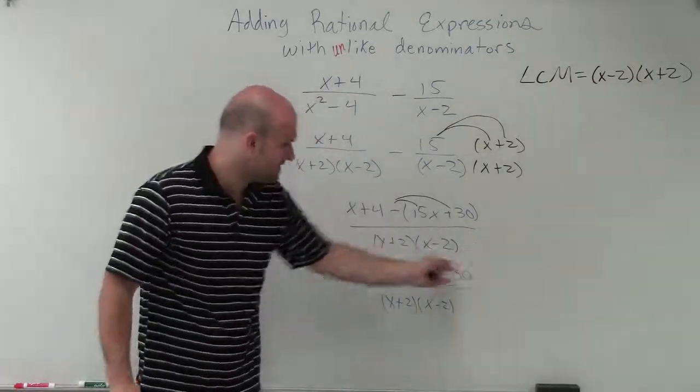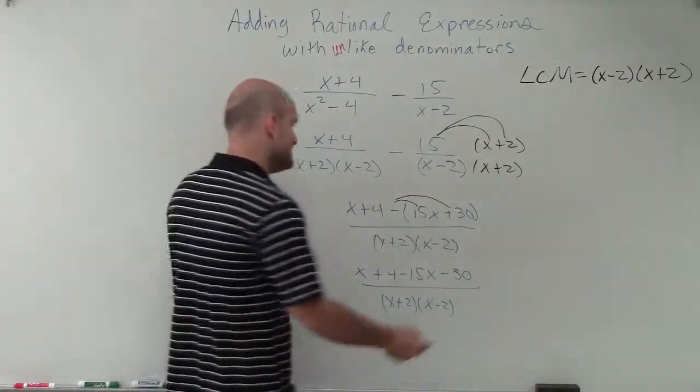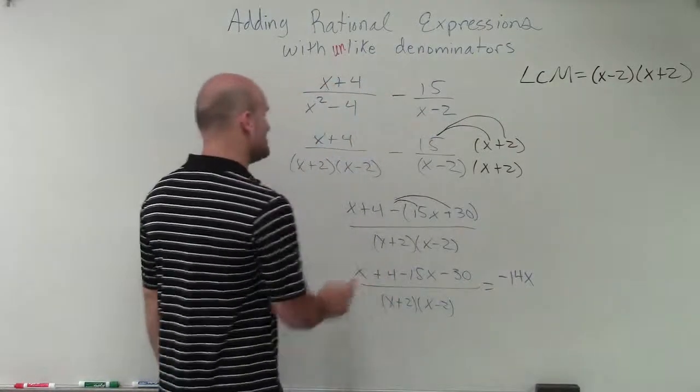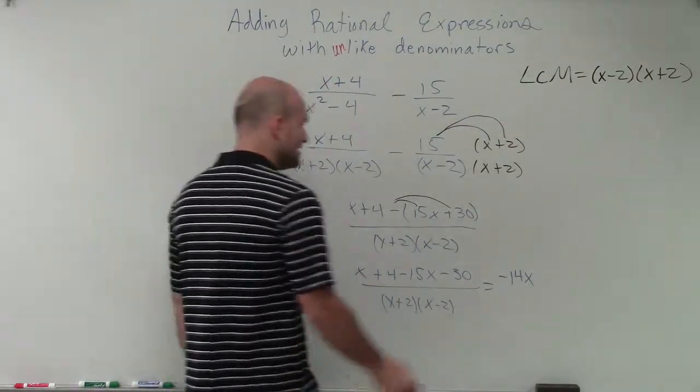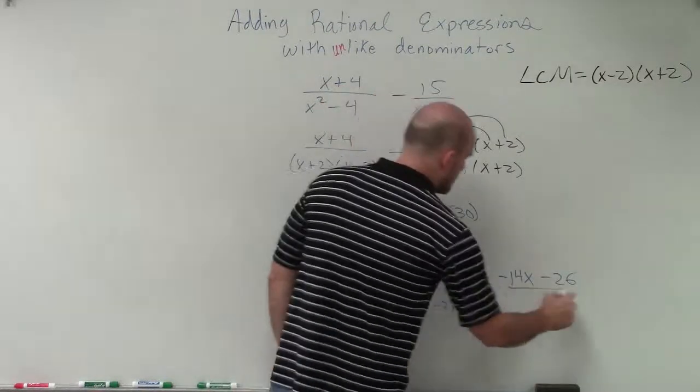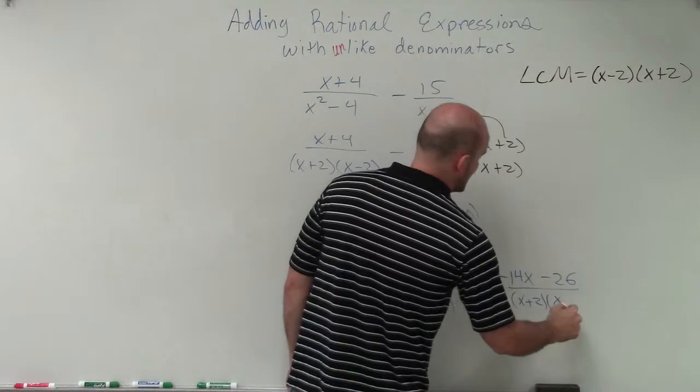Well now you see that everything's written up there. Now I can combine my terms. So x minus 15x is going to be negative 14x. And positive 4 minus 30 is going to be negative 26, all over x plus 2 times x minus 2.